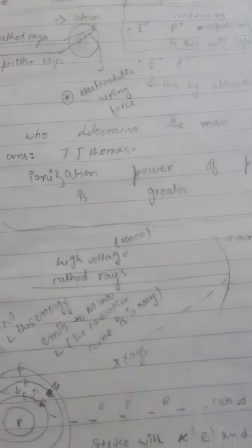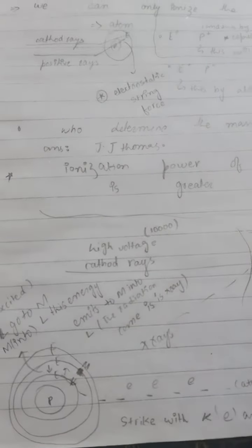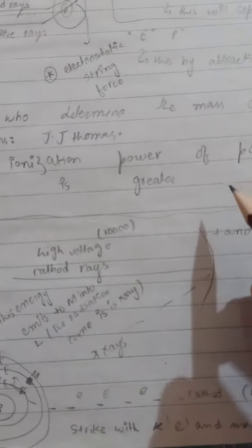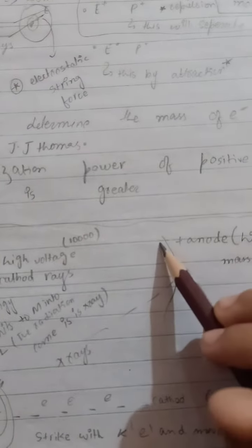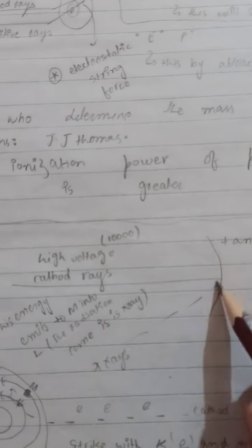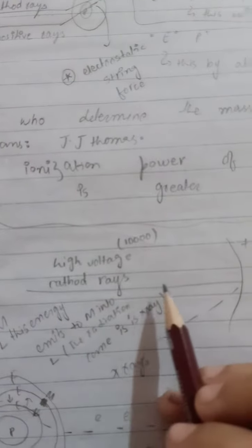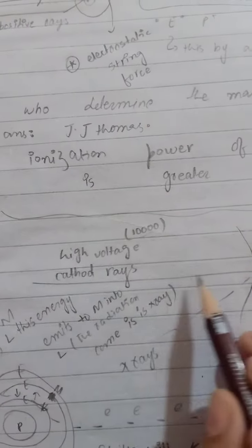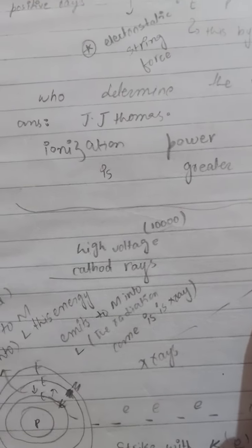In today's lecture we learned about the production of X-rays. For example, there is the anode plate which has a high atomic mass, and these are the cathode rays with high voltage. The voltage is 10,000 volts. When we strike here, the production of rays coming out will be X-rays.